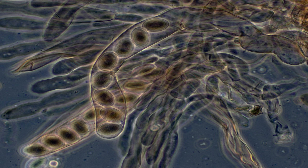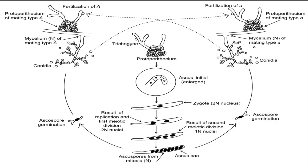Neurospora crassa is the most analyzed heterothallic species. Homothallic means any haploid individual strain can go through the sexual cycle by itself without pairing with another strain. Homothallic species do not need both mating type idiomorph sequences, but in some cases one or another can be detected in the genomic sequence. In order to go through meiosis as part of the sexual cycle, a diploid nucleus must form by fusion of two haploid nuclei. Neurospora galopagensis is one homothallic species.